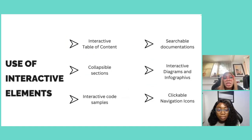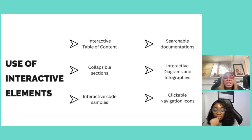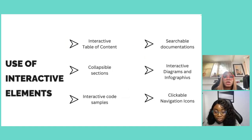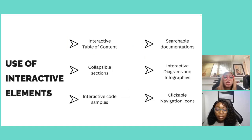Use interactive elements like tables of contents, but in a limited way. Collapsible sections are good but must have guidelines — ensure they don't hide important information. When you have a long document, you can put content in collapsible sections to allow people to skim through. You can also include code samples to explain and make documents more accessible.